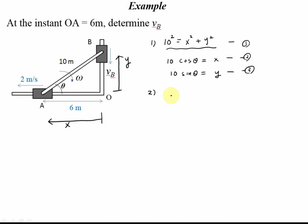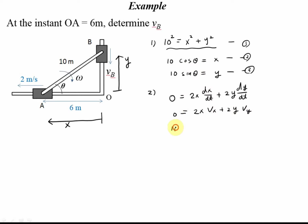From the first equation, the left side becomes zero, and using the chain rule on the right side gives: 2x times Vx plus 2y times Vy equals zero. From the second equation: negative 10 sine theta times omega equals Vx. And from the third: 10 cosine theta times omega equals Vy.